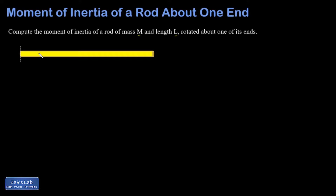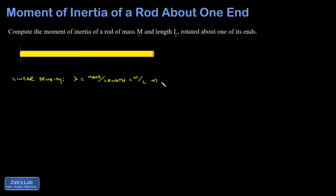Before I get into the calculation, I have to talk a little bit about the concept of linear density. Linear density is normally given the symbol lambda, and that is mass per unit length — mass over length, or M over L. This also means if you wanted the mass of something and you knew the linear density, you could get that just from lambda times L.